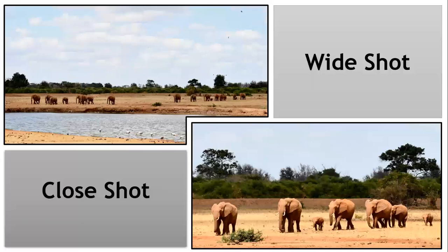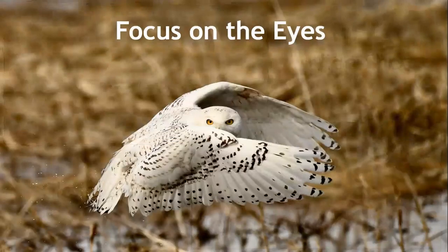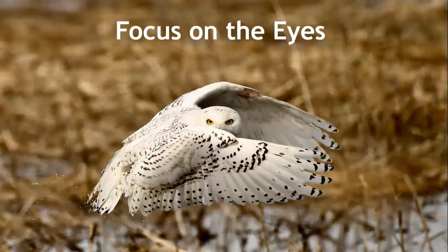The next slide shows an example of a wide shot versus a close shot of the same scene. The wide shot shows the watering hole with birds and the whole landscape, while the close-up has more detail of the baby elephants with the adult elephants. The next shot is a great example of focusing on the eyes — it's a funny shot too, of a bird in mid-flight with the water splashing from it. It had just taken off and the wings came out like that, and it was looking right at the camera — one of those fun shots.